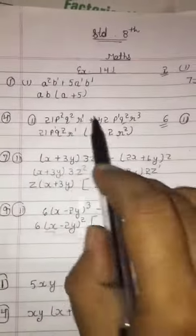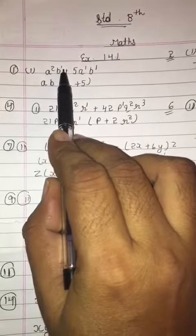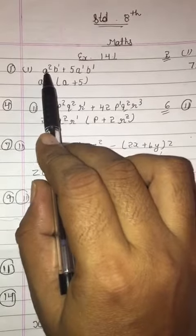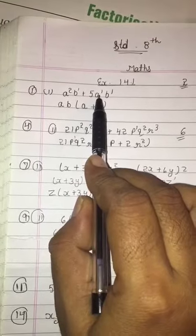First question: a² + 5ab. If nothing is written in the power, we have to write the power as one. Now see, a² has power two and here a has power one, which is the smallest power.